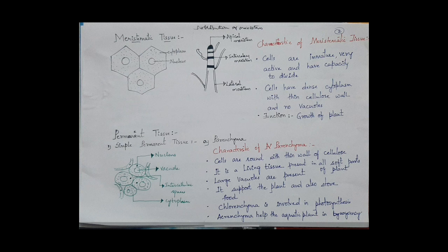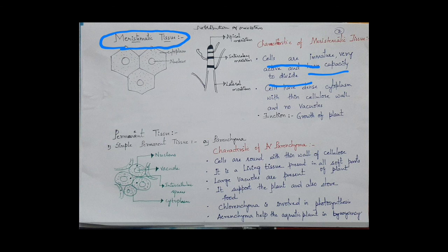The characteristics of meristematic tissue: cells are immature, very active, and have capacity to divide. The cells have dense cytoplasm with thin cellulose walls and there is no vacuole present. They are present at the growing region of the plant.